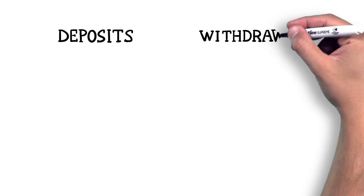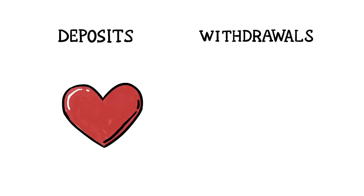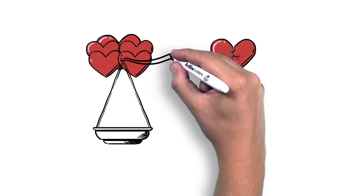In fact, Gottman found it takes five positive interactions to make up for one negative one. Happy couples maintain at least this 5 to 1 ratio.